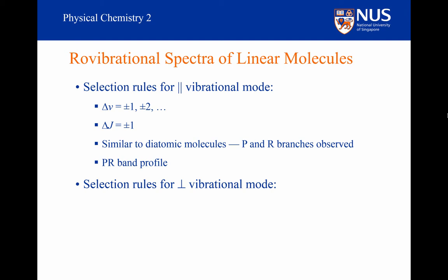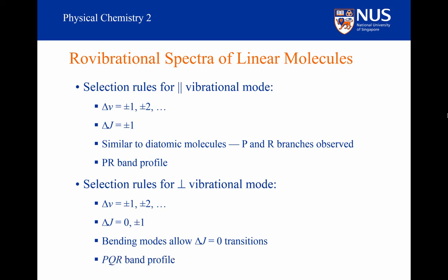So does that make any difference? Well, delta V is equal to plus or minus 1 or plus or minus 2, etc. But now you see the difference: for a perpendicular vibrational mode of a linear molecule, delta J can be equal to 0. So we now can get another band appearing in our roto-vibrational profile. We'll have a P branch associated with delta J equal to minus 1, an R branch associated with delta J equal to plus 1, and a Q branch associated with delta J equal to 0. The Q branch will be right in the centre of the P and R branches, and all Q branch transitions are going to be overlapping. We get what is called a PQR band profile.